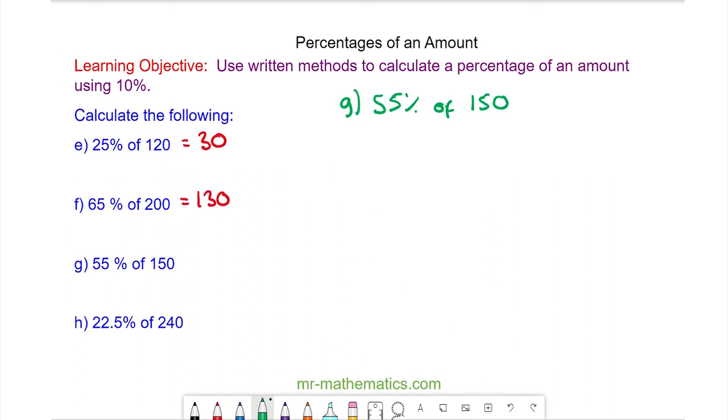For question g we know 10% will be 150 divided by 10 which is 15. 5% will be half of that so 7.5. And then we can add 50% by multiplying 5% by 10. So 50% will be equal to 75. And we add them two together we get 55% is equal to 82.5.